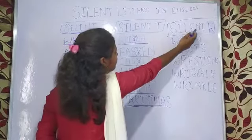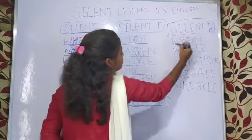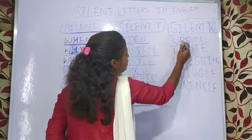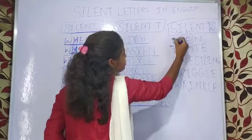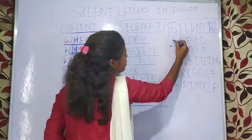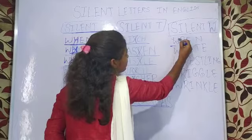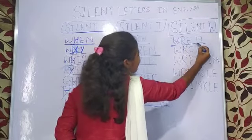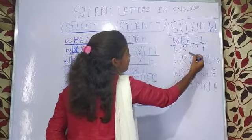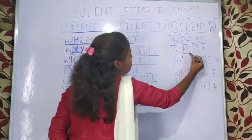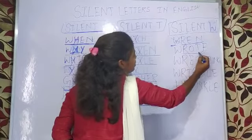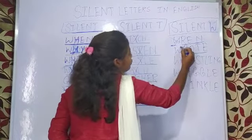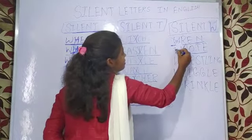Now come to silent W. You will not spell the W — you will read 'when.' And again, R-O-T-E — 'wrote.' You will not read the W. You will read 'wrote.'